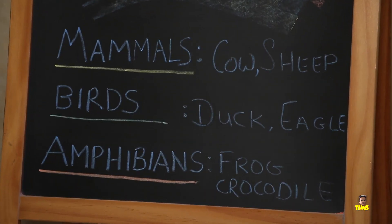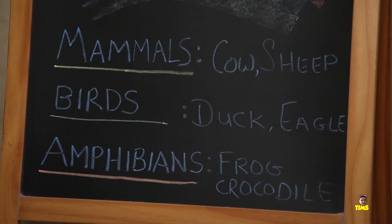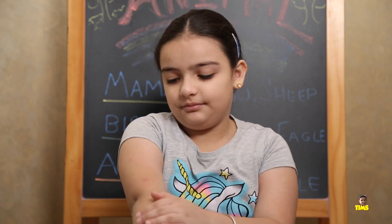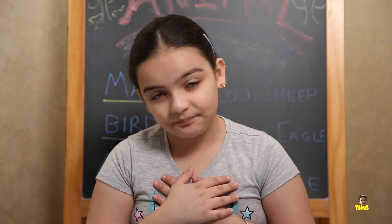Mammals. Mammals give birth to their young ones if they have head and their body like we do. They also breathe from their lungs like we do.